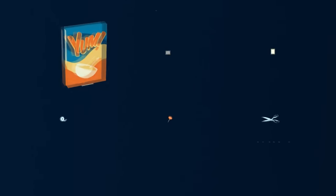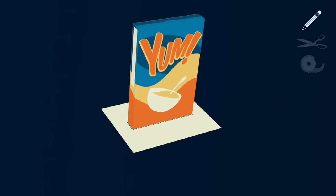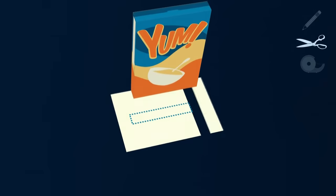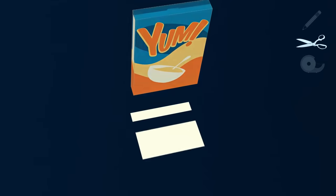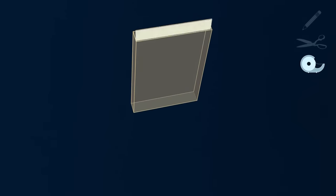Step 1: Trace the bottom of the cereal box on a piece of white paper and cut the paper out. Step 2: Tape the paper to the inside of the bottom of the box and seal the top.